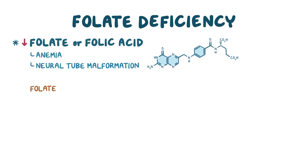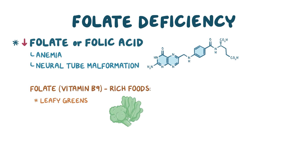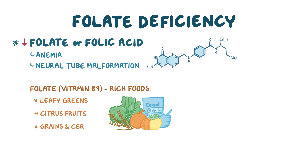Folate, also known as vitamin B9, mainly comes from eating leafy greens and citrus fruits like oranges and lemons. And nowadays, most countries fortify foods like grains and cereals with folate.